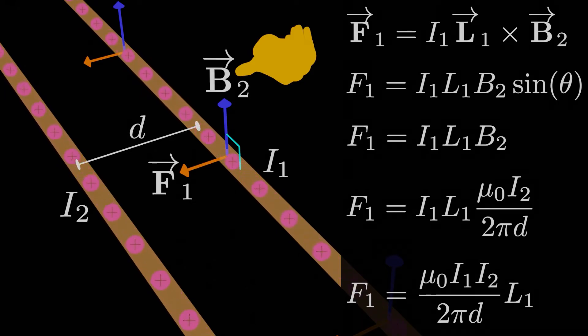So that's it for wire 1. The force on wire 1 due to wire 2 is just mu-naught I1 I2 times L1 all over 2 pi D. And the direction is towards the other wire in this case. Wire 1 is attracted to wire 2.